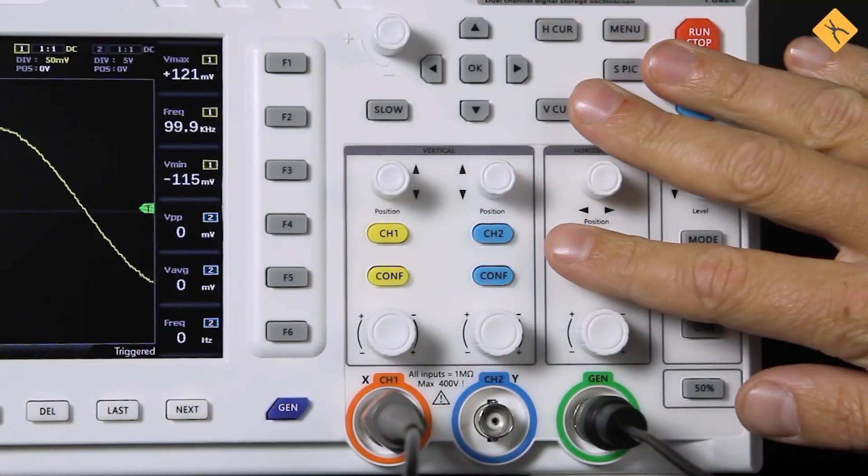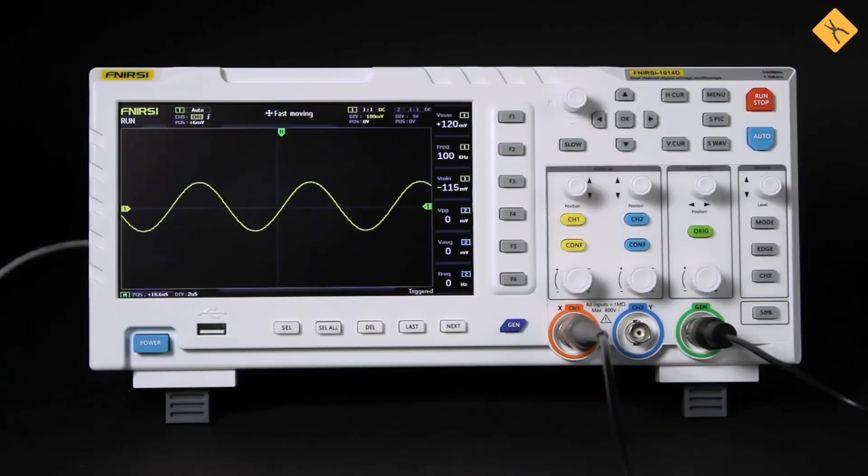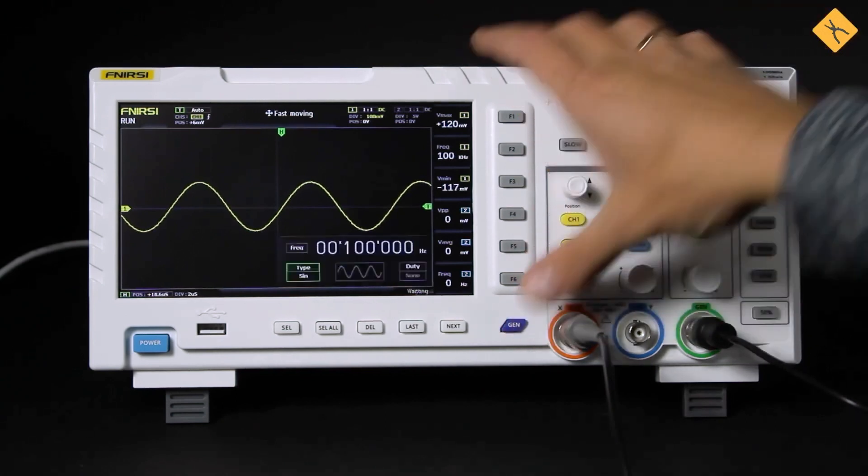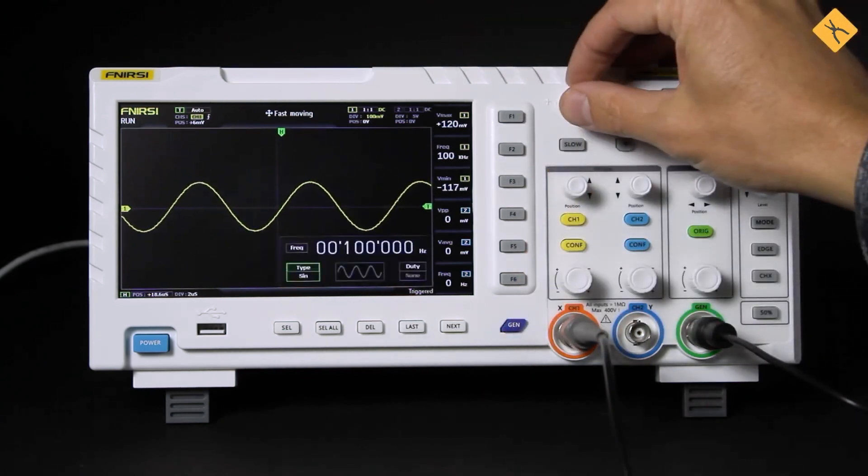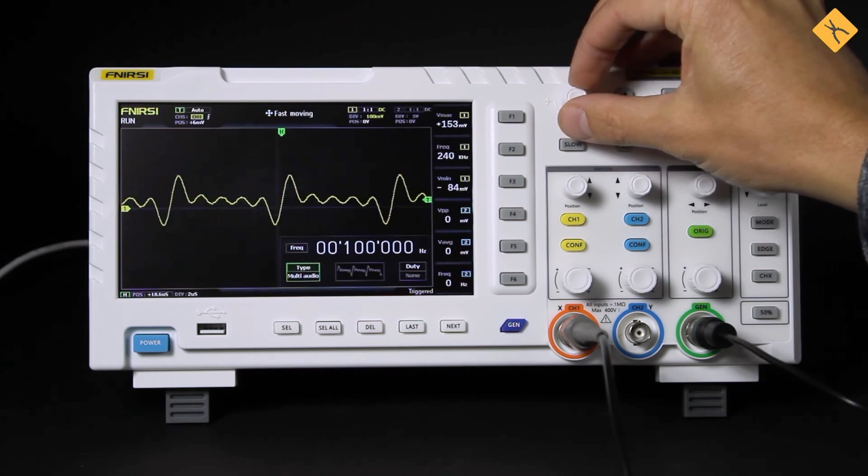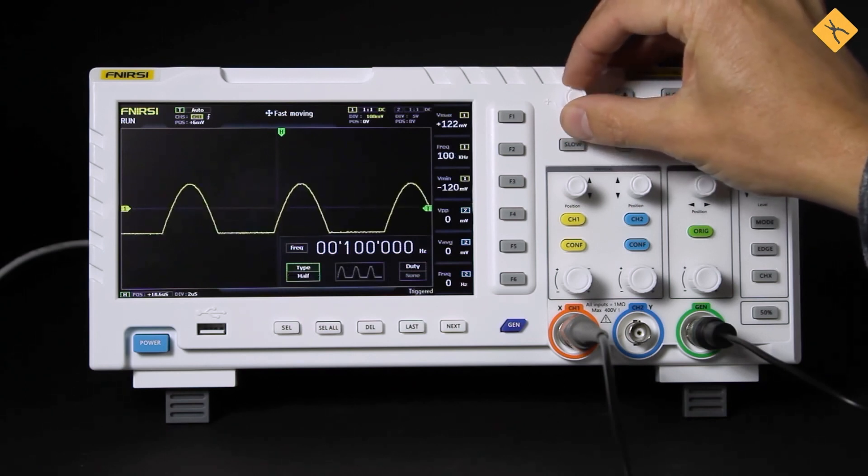The oscilloscope features a built-in signal generator. The memory supports 14 standard waveforms and one arbitrary waveform that may be captured and stored in the oscilloscope's memory.